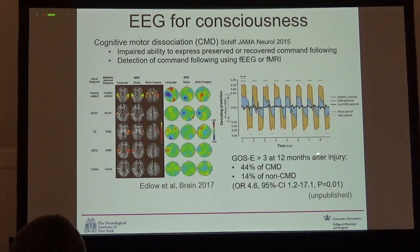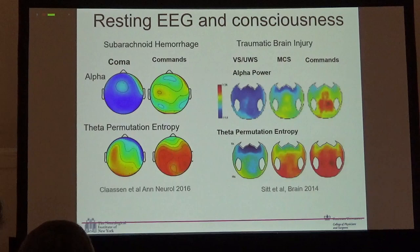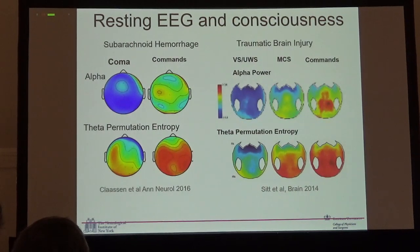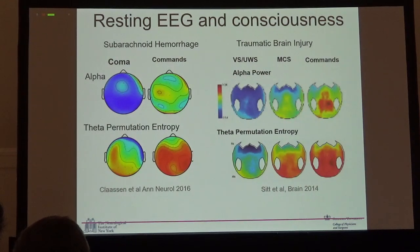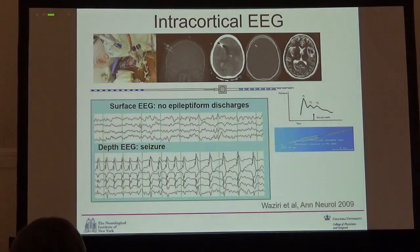This finding was highly associated with functional outcome one year later. In resting-state EEG, when Jacobo Sitz's group classified patients based on EEG alone and the algorithm was wrong, those misclassified patients were much more likely to emerge from the unresponsive state over the following weeks and months — suggesting the EEG is detecting something about consciousness that we cannot otherwise detect.